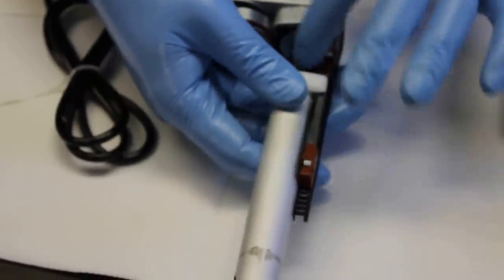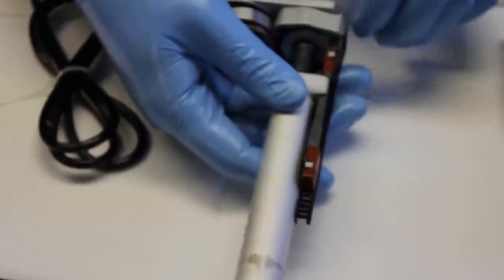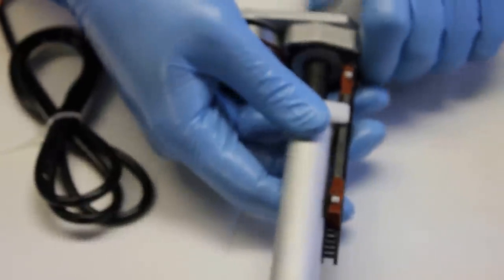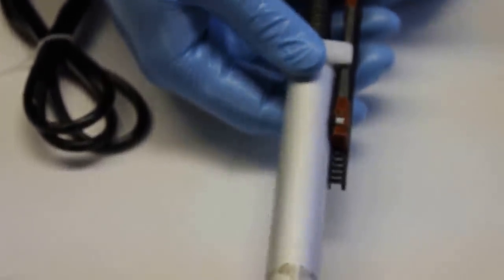Here you can see the lead screw. So this is a threaded screw. As it turns, it pushes the actuator rod out. You can see me just turning the gear right here.